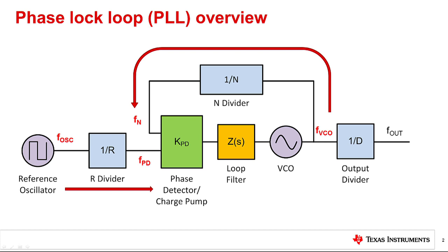The phase detector and charge pump outputs a correction current that is proportional to the phase error between the two inputs, fn and fpd. The loop filter integrates these correction currents and produces a tuning voltage to steer the VCO output frequency.